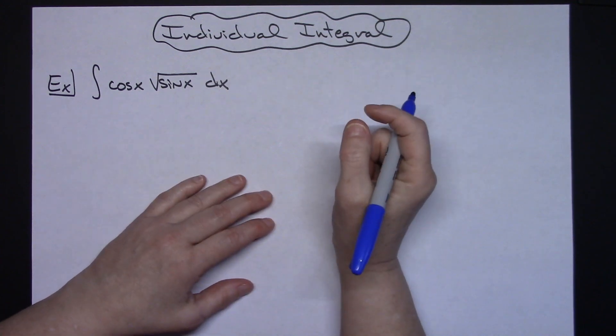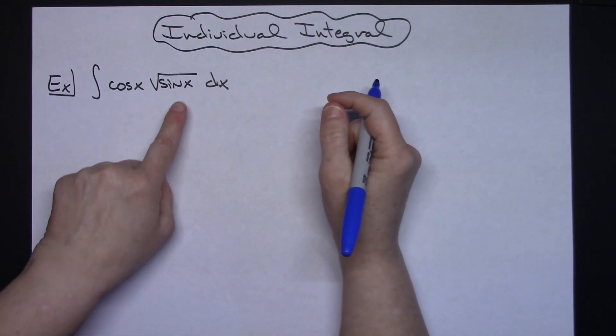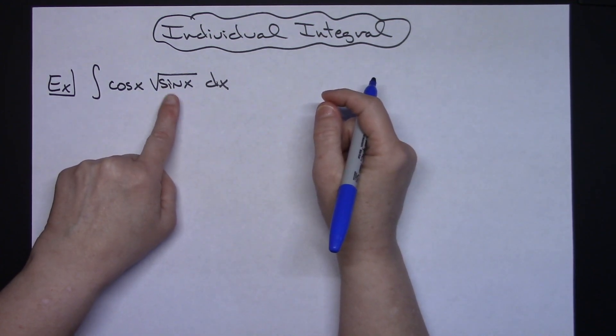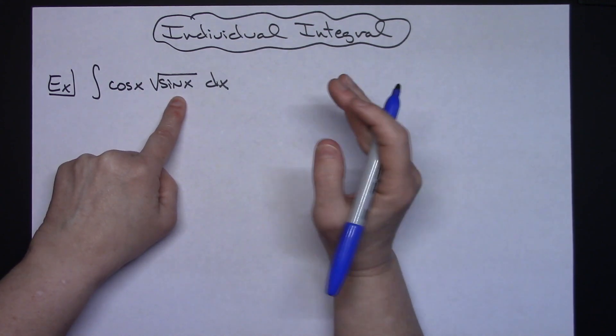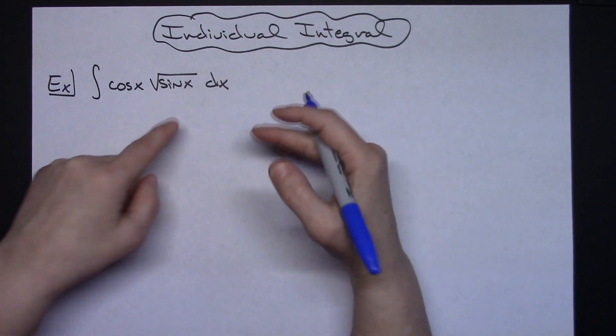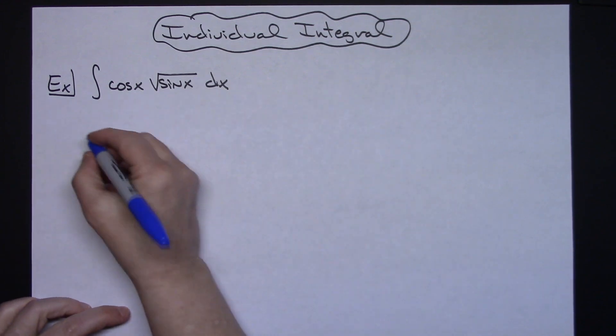Now for the most part this is going to be a straightforward u substitution because hopefully real quickly you can see there that if I look at that inside function sine x and I take the derivative of that I am going to get cosine which means things will cross out really nicely.